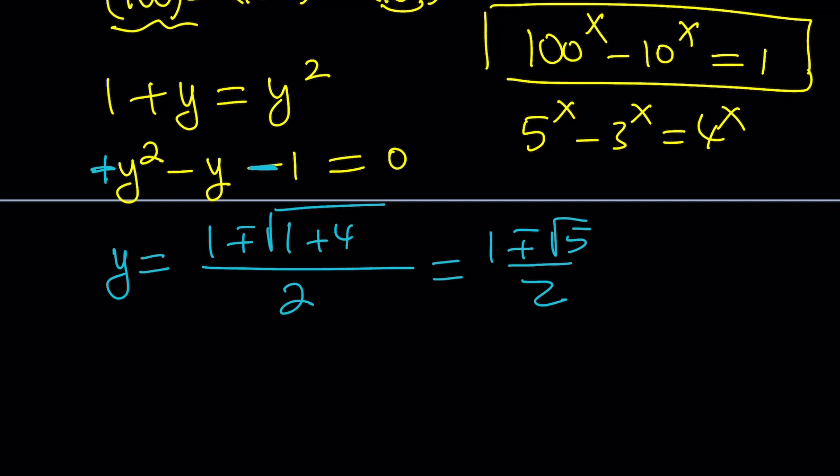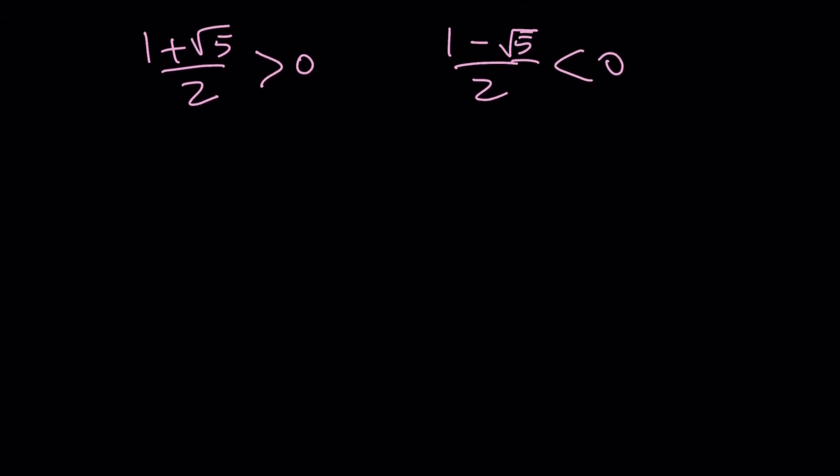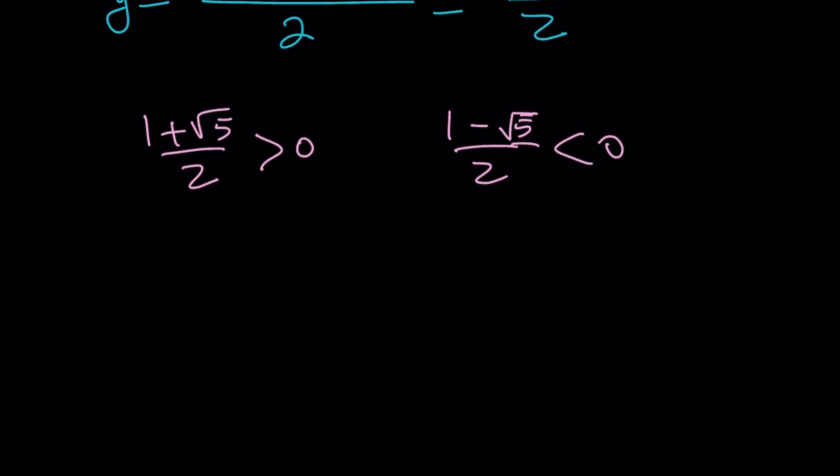But are all the x values real? That's what we want to find out. How do we go from the y values to the x values? Well, we have to back substitute. But one thing I want you to notice before I get into another substitution business is that 1 plus root 5 over 2 is greater than 0. And 1 minus root 5 over 2 is less than 0. That's going to bug me, so I kind of have to clean it up a little bit. So why did I say that? You'll see in a little bit why this is important. So let's start with this. Since y is equal to 10 to the power x, we got, first of all, let's start with this value. This is equal to 10 to the power x.